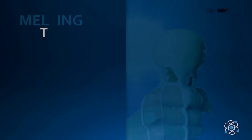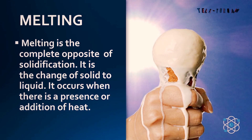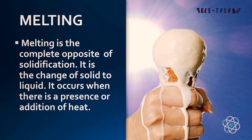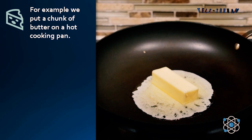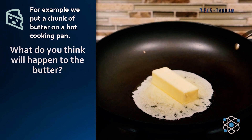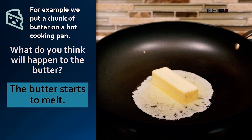Next, we have melting. Melting is the complete opposite of solidification. It is the change of solid to liquid. It occurs when there is an addition of heat. For example, we put a chunk of butter on a hot cooking pan. What do you think will happen to the butter? Correct! The butter starts to melt.